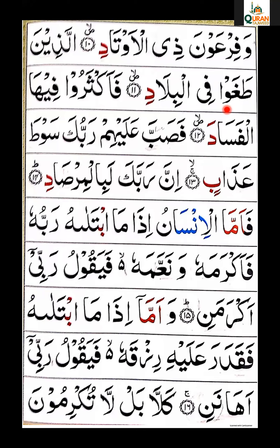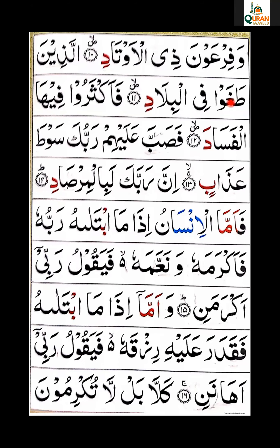طَغَوْا فِي الْبِلَادِ — طَغَوْا اس کو پڑھتے وقت خیال رکھئے گا کہ آپ کے ہونٹ گول ہونے چاہیے۔ فِي الْبِلَادِ — فا کو ڈائریکٹ ہم لام کے ساتھ ملائیں گے، یا اور الف کو چھوڑ دیں گے — فا لام زیر، فِل۔ با زیر، بِ۔ فِي الْبِي — لام الف زبر، لا — لام الف مدہ ہے اس لئے کھینچیں گے — فِي الْبِلَا۔ دال زیر — دِ — اور آیت پر قلقلے کے ساتھ وقف کریں گے۔ پوری آیت: اَلَّذِينَ طَغَوْا فِي الْبِلَادْ۔